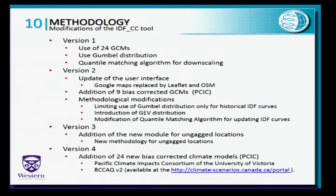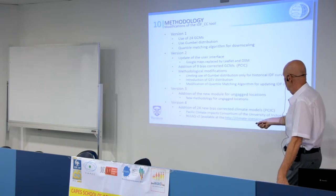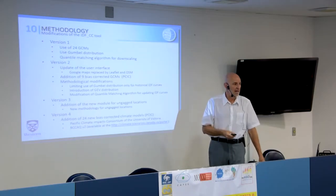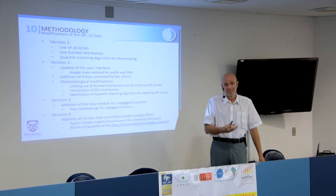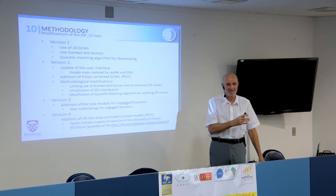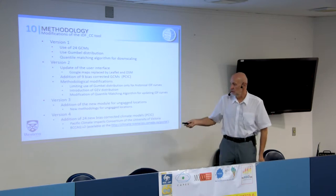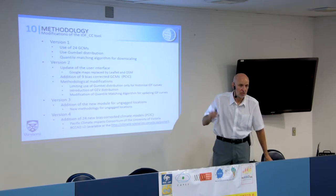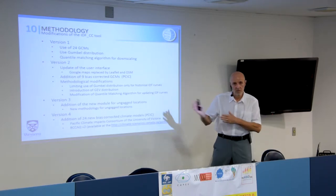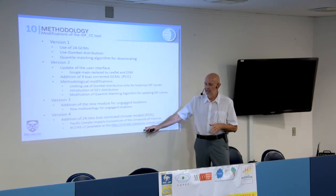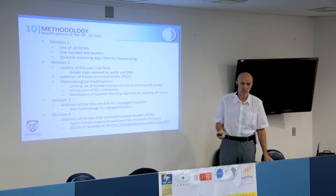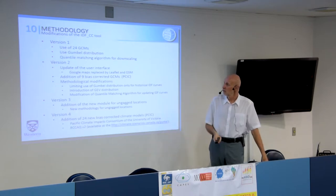The consortium provides detailed information on its website for downloading climate data for any location in Canada, and explains how the bias correction is done — which is a sensitive issue, since different bias-correction methods can yield different climate information. We distance the tool from these climate inputs in the sense that the climatologists handle that work; it feeds into the tool's database, but the bias correction is done by those doing it on a regular basis. This is where we are right now with the tool. Let me give you information about the methodology.